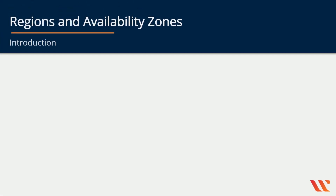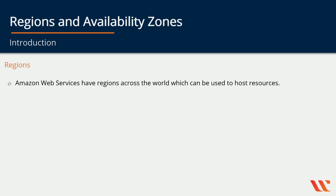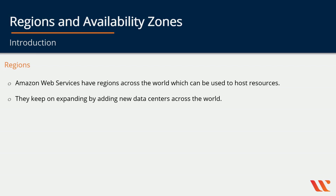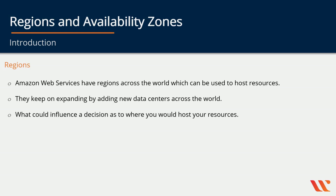Let's look at regions and availability zones. First, let's have a look at regions. Amazon Web Services have regions across the world that can be used to host their resources. They keep on expanding by adding new data centers across the world. If you look at the AWS documentation, you will see all the regions in the world which currently have data centers that you can use to host resources.